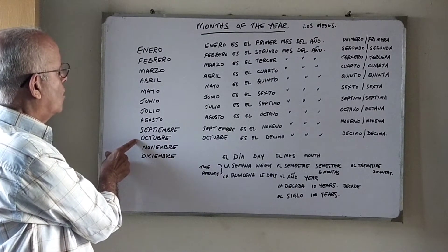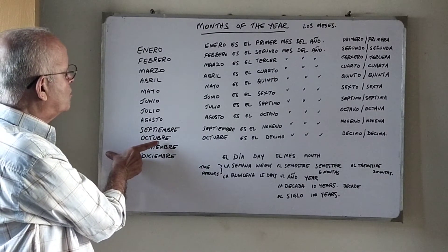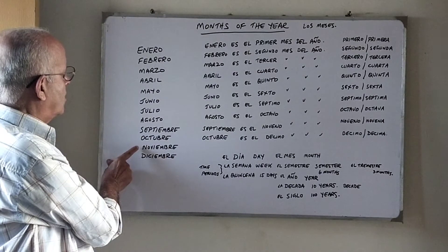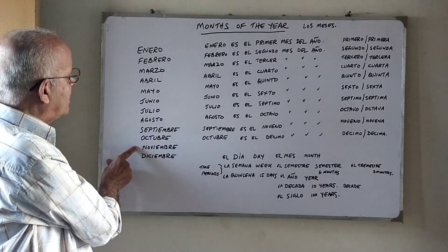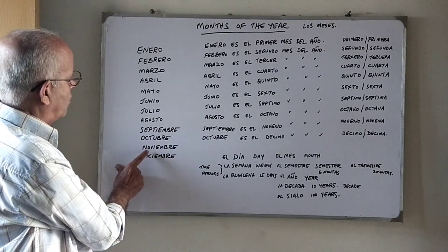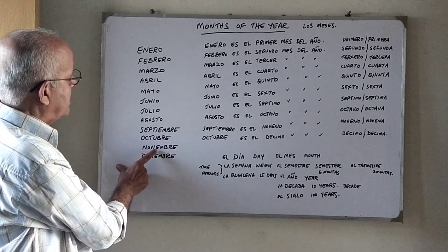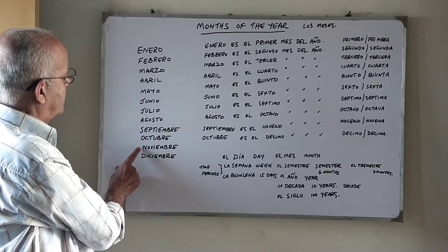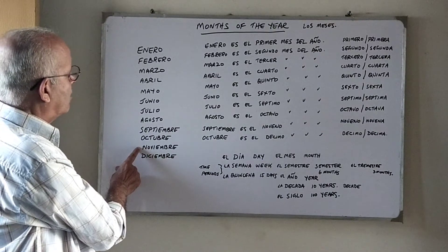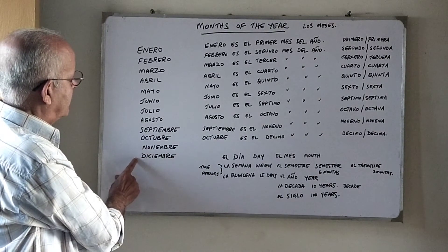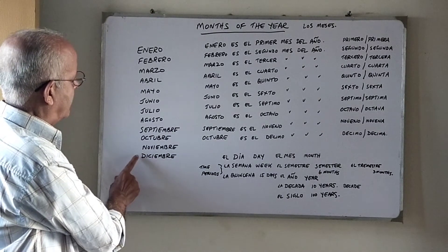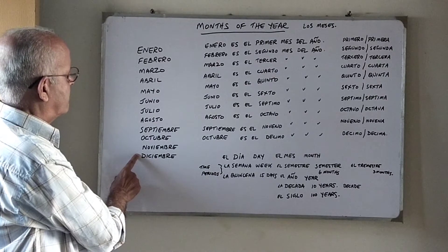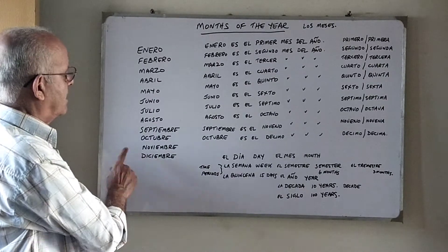Octubre, octubre — October. Noviembre, noviembre — November. Diciembre, diciembre — December.